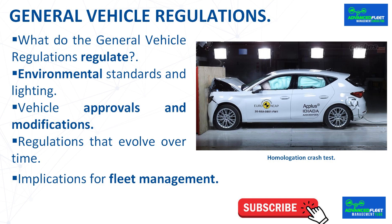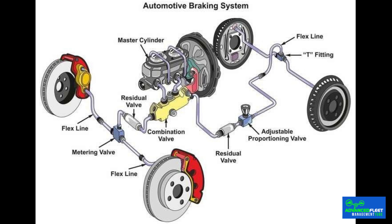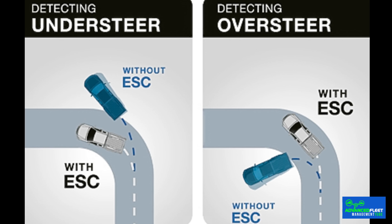Mechanical safety and mandatory systems. The regulations require all vehicles to have effective braking systems. Current regulations establish minimum response and effectiveness parameters, ensuring that any vehicle can stop safely. In addition, it regulates the installation and approval of components such as ABS brakes, brake assist systems, and electronic stability control (ESP), among others.